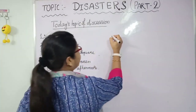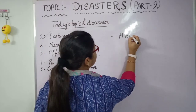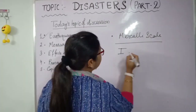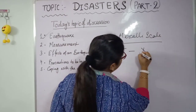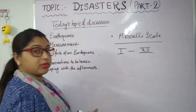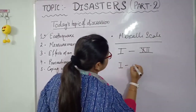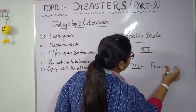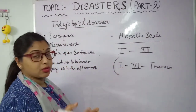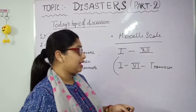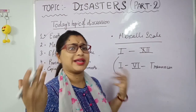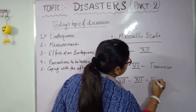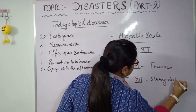One more modified scale that people use is the Mercalli scale. The Mercalli scale uses Roman numerals from 1 to 12. From 1 to 6, only tremors or trembling or shaking of the crust can be seen — no massive destruction. But from 7 to 12, strong destruction will be there. So these two scales — Richter and Mercalli — are used to measure the magnitude of the earthquake.